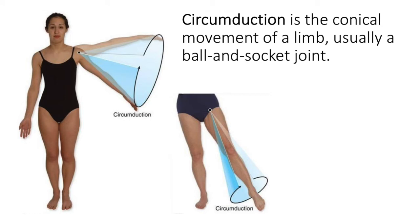Circumduction is one of the actions that doesn't come in a pair — it's simply circumduction. It's a conical movement that most commonly occurs around a ball-and-socket joint. It's that big round shoulder movement where you bring your arms in towards the midline and back out. You can also do it with the hip joint, and rolling your neck in a big circle would be head circumduction.